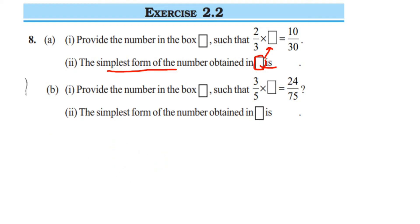Now let's move on to the second question. First bit: provide the number in the box such that 3 by 5 multiplied by that number will give you 24 upon 75. It's the same as the first question. To 3 by 5, what should you multiply to get 24 upon 75?